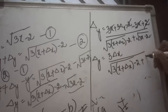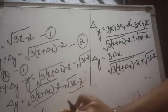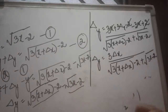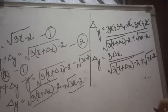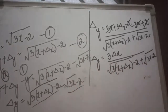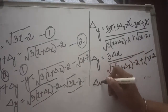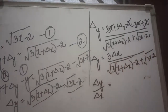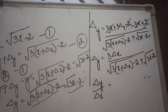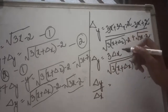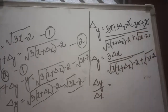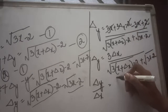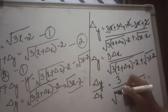The next step is dividing both sides by delta x. On the left hand side we get delta y upon delta x, and on the right hand side dividing by delta x cancels the delta x in the numerator, leaving 3 divided by root(3x + delta x - 2) plus root(3x - 2).